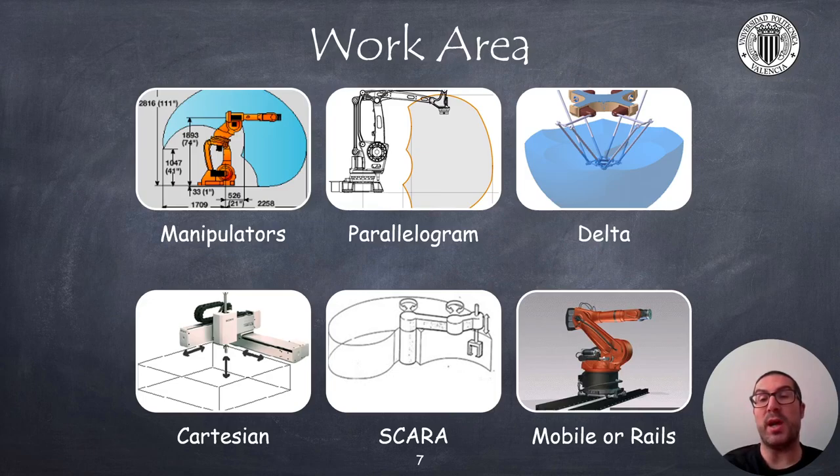Manipulator robots have a typical work area like the one shown in the figure, being able to work behind the robot, while parallelogram robots have a smaller work area for similar dimensions. Delta robots typically have a work area as the one shown, like a 3D parabola.